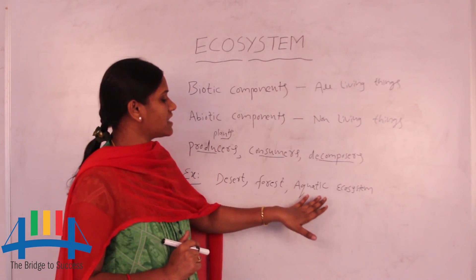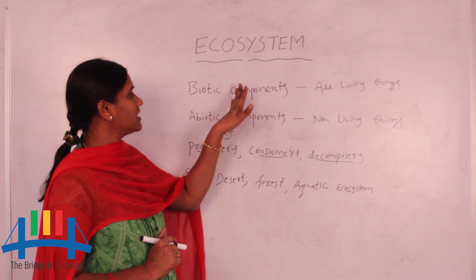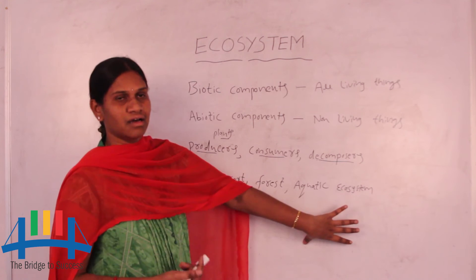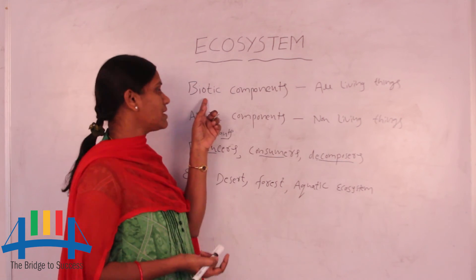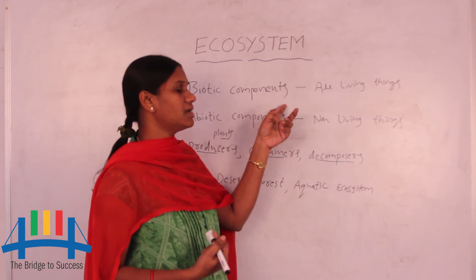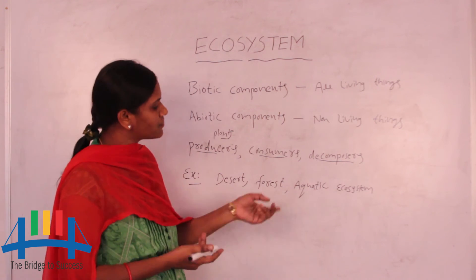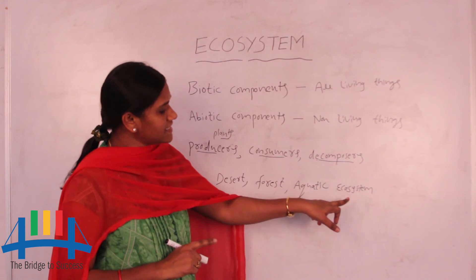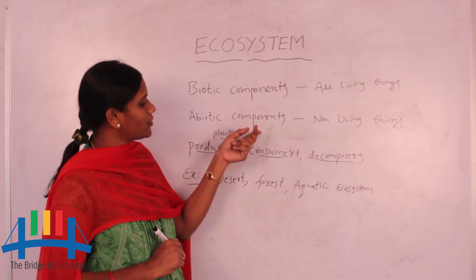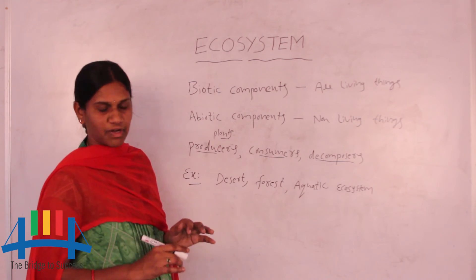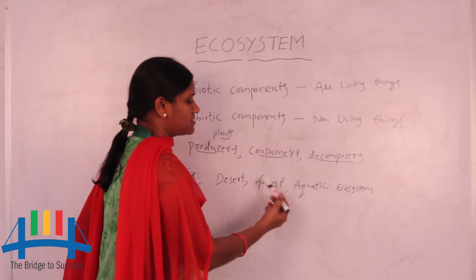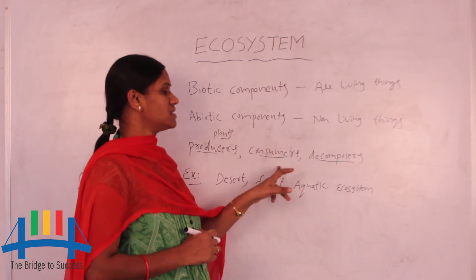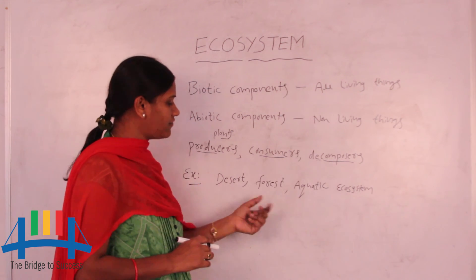Then aquatic — the aquatic ecosystem also contains both plants and animals. Aquatic plants like hydrilla and lotus are the plant side. On the animal side, all aquatic animals — fishes, crabs, prawns — are examples of biotic components in the aquatic ecosystem. Abiotic components are again the same across all three ecosystems: desert, forest, and aquatic. Producers, consumers, and decomposers are present in every ecosystem.